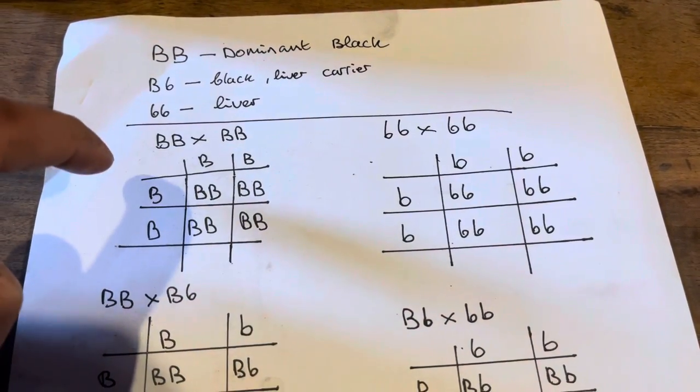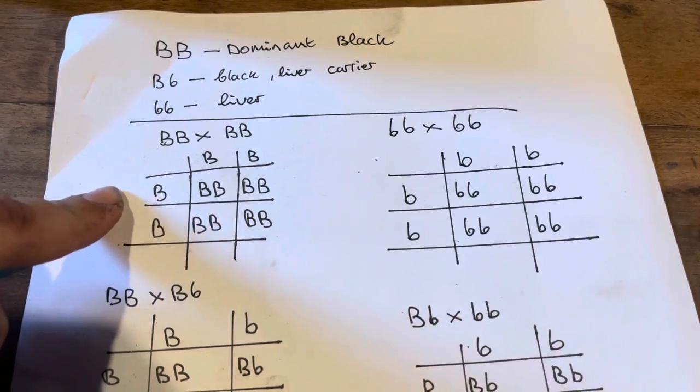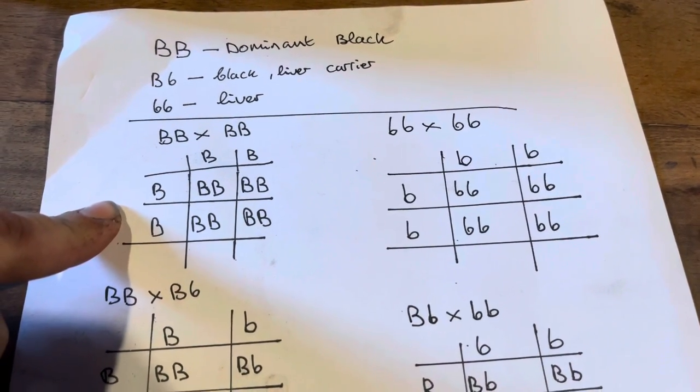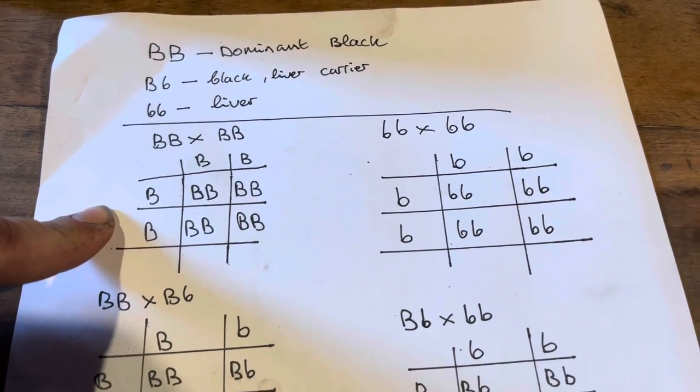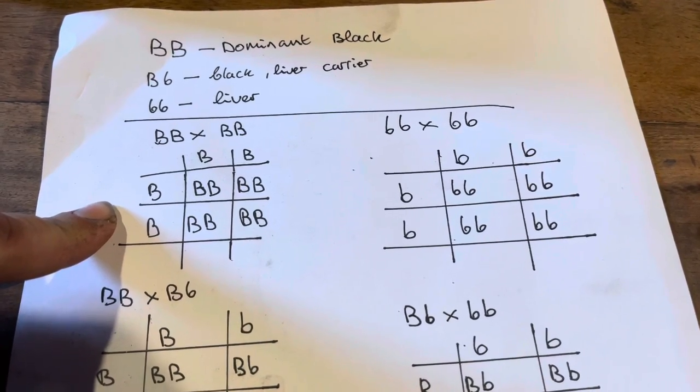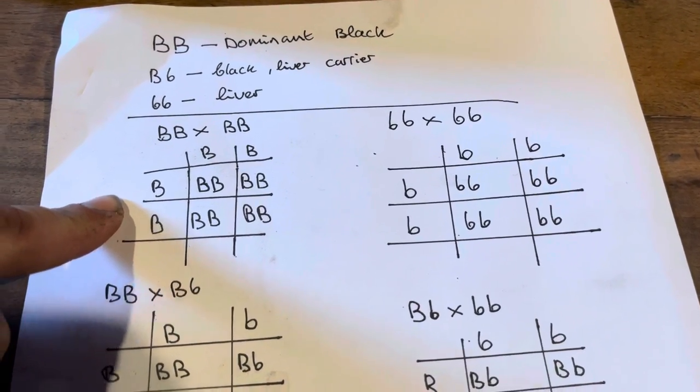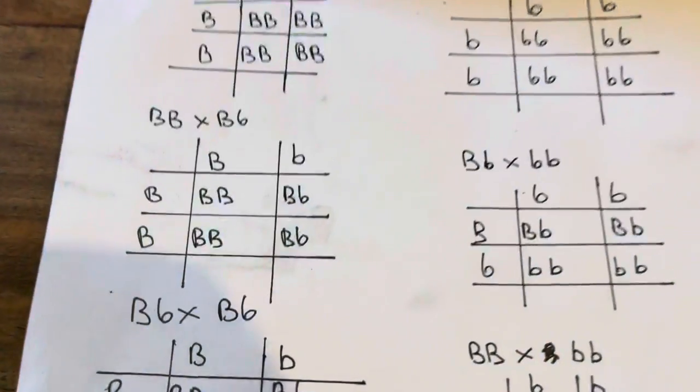Dominant black with a dominant black, all puppies would be dominant black. Liver spot with a liver spot, all puppies would be liver spot.